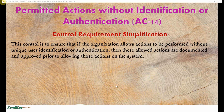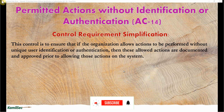Now let's look at the control requirement simplification. This control is to ensure that if the organization allows actions to be performed without unique user identification or authentication, then these allowed actions are documented and approved prior to allowing those actions on the system. Whenever there is the need for actions not requiring identification or authentication to be performed on a particular system, those actions should be documented and approved, and reflected in the SSP or any other policy documentation.